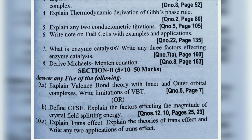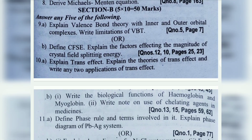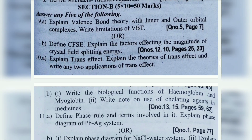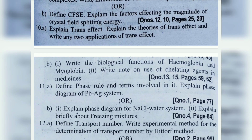9th (a): Valence Bond Theory. 9th (b): CFSE — Crystal Field Splitting Energy. 10th (a): Explain Trans Effect. 10th (b): Biological functions of hemoglobin and myoglobin. 11th (a): Define Phase Rule — in the phase rule, draw the diagram for lead and silver (Pb-Ag) system.